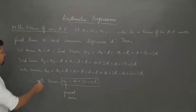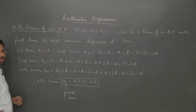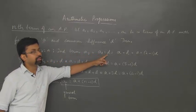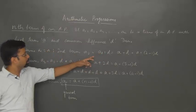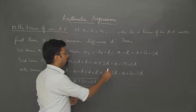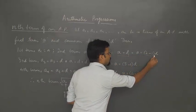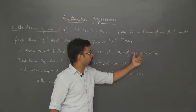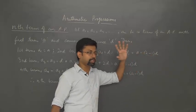The first term a1 will be equal to a. The second term would be equal to the first term plus the common difference. So a1 is equal to a, and the second term a2 will be a plus d, which can also be written as a plus (2 minus 1) times d, since 2 minus 1 is 1, giving us a plus d.